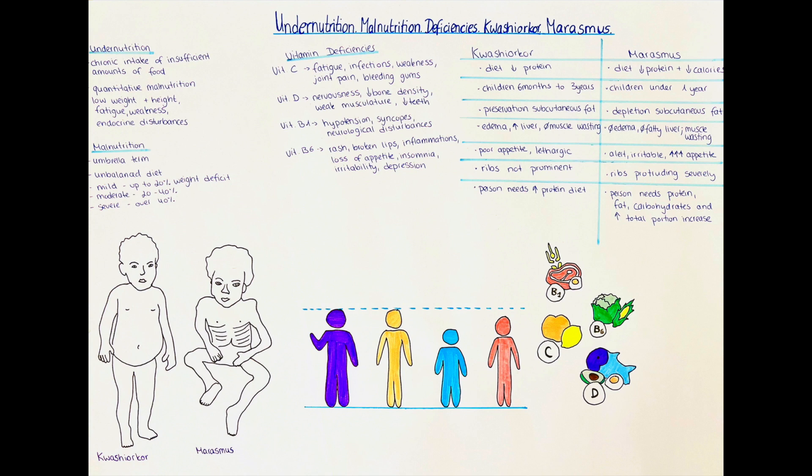The diagnosis of undernutrition is done by measuring the height and weight of the individual. In children a reduced weight is often observed together with a smaller height than the child of a certain age group should usually have reached. To check the specific age-related height there are growth charts from the WHO available to everyone on the webpage.